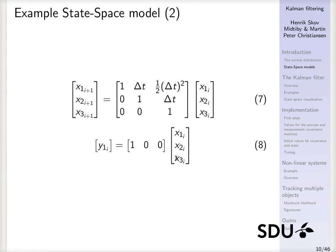But if you repeatedly measure the position of the system, you can infer the current velocity and acceleration by utilizing knowledge about how the state transition matrix is constructed.